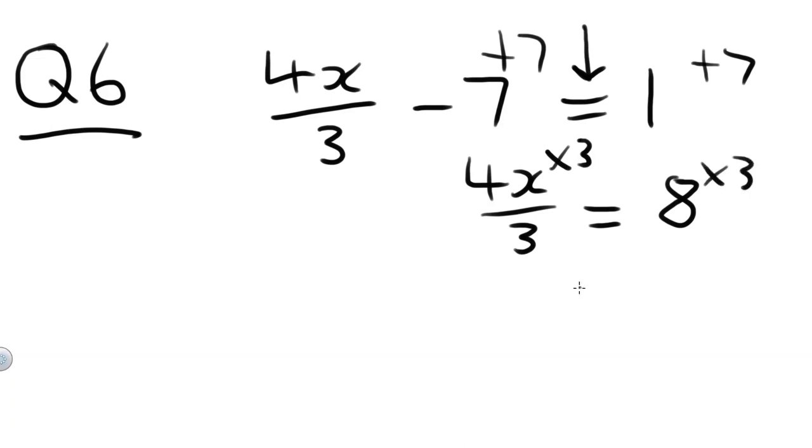Do it on both sides. 4X over 3 times 3 equals 4X. 4X equals 8 times 3 is 24. X will equal, well to get rid of that 4, we have to divide by 4 because 4 times X, the opposite of that is divide by 4. Divide both sides by 4. X will equal 24 divided by 4, which equals 6.